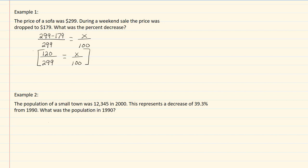Multiply by our common denominators. I'll cross off 299 there, and I get 100 times 120, which will give me 12,000, equal to our hundreds will cross off here, giving us 299x.